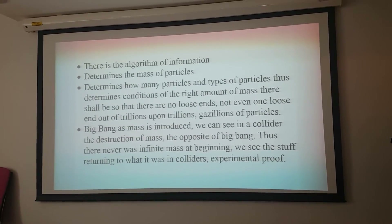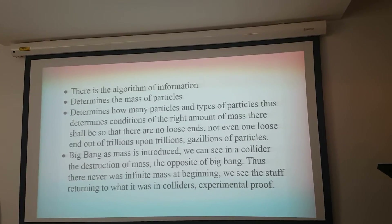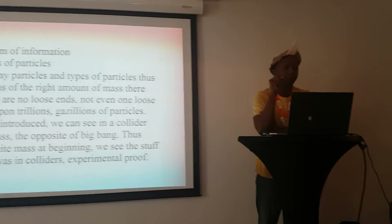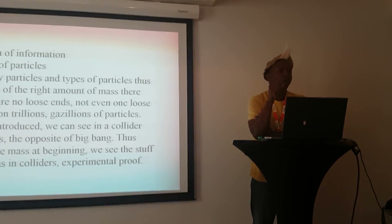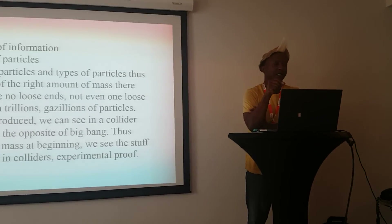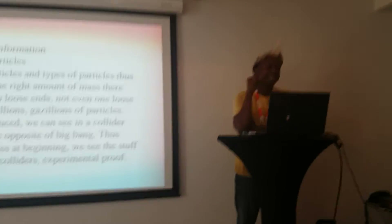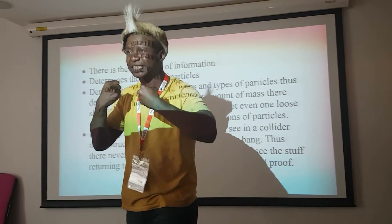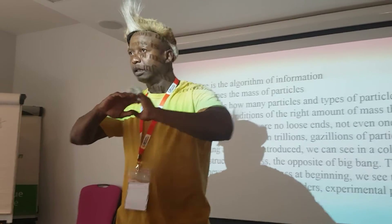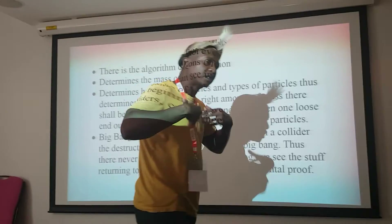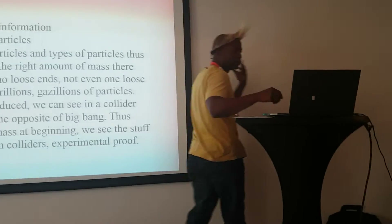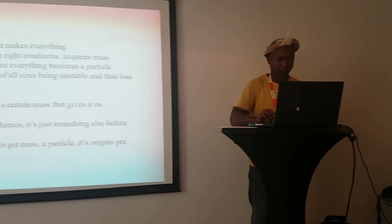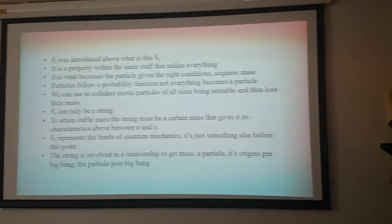The Big Bang is when mass is introduced. We can see in a collider the destruction of mass — that is the opposite of a Big Bang. Thus there never was infinite mass at the beginning. We see the stuff in a collider returning to what it was — that is experimental proof. When particles smash each other we get exotic particles, and that thing returns to what it was before. You can't get more experimental proof than a collider.